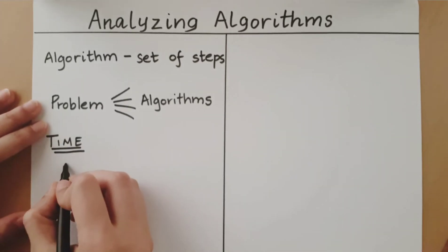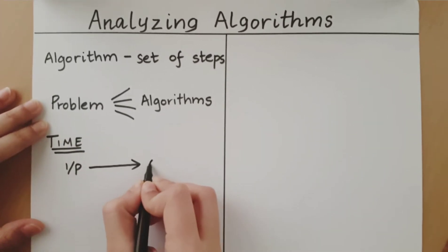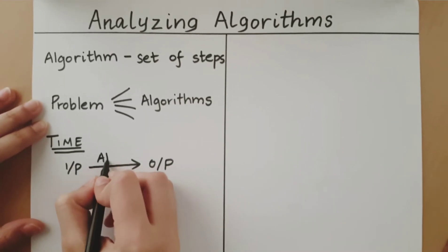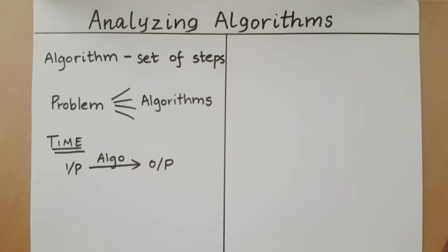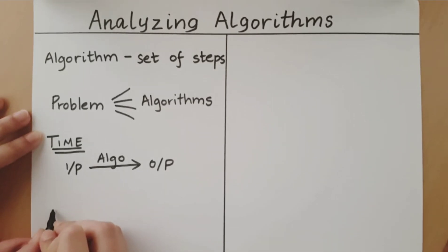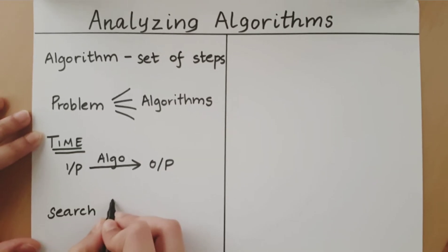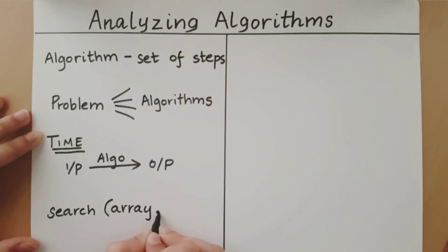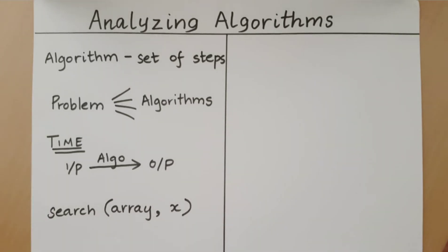Now an algorithm takes an input and produces an output. The time with which it does so is largely dependent on the input. Let me explain this with an example. So let us consider a very simple search function. What this search function does is it takes in an array and a number x and it checks whether x is present in that array.